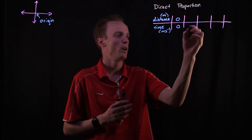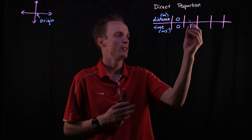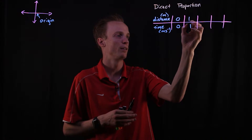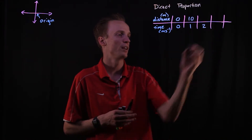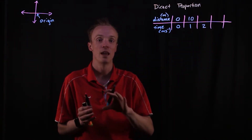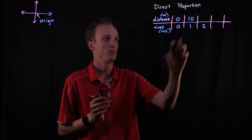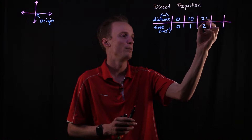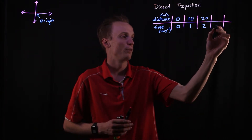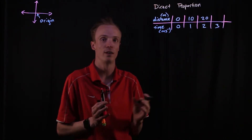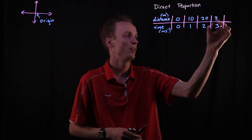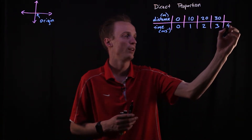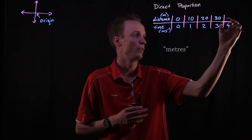After one second, the object will have moved 10 metres, because it's 10 metres every second. After two seconds, it's 10 metres plus another 10 metres, so a total of 20 metres. After three seconds, it's three lots of 10 metres, or 30 metres in total. And after four seconds, it will be four lots, which is 40 metres.